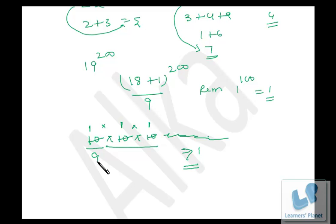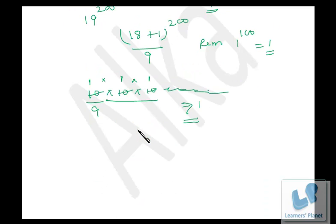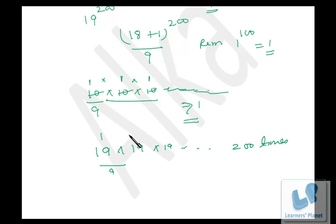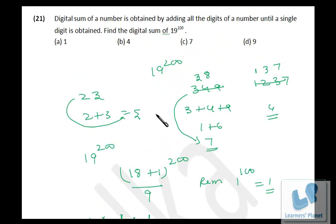So if you divide each individual number and get the remainder, then multiply all the remainders until you get a value less than the divisor, that will be your remainder. Similarly, 19 raised to 100 is 19 multiplied 100 times. Divide each by 9 — remainder is 1 each time — so 1 times 1, 100 times, is still 1. Therefore the digital sum of 19 raised to 100 is 1.